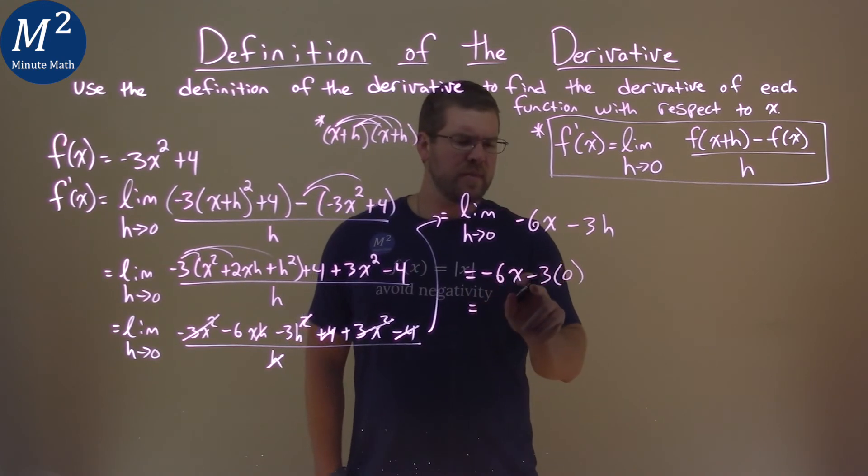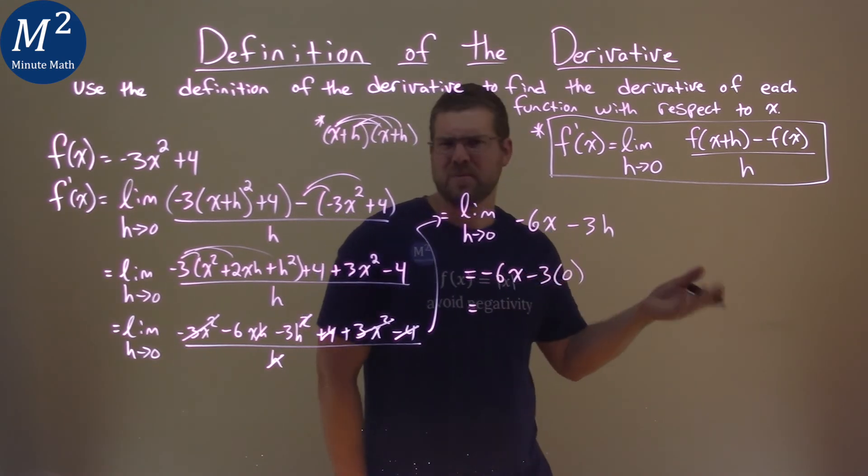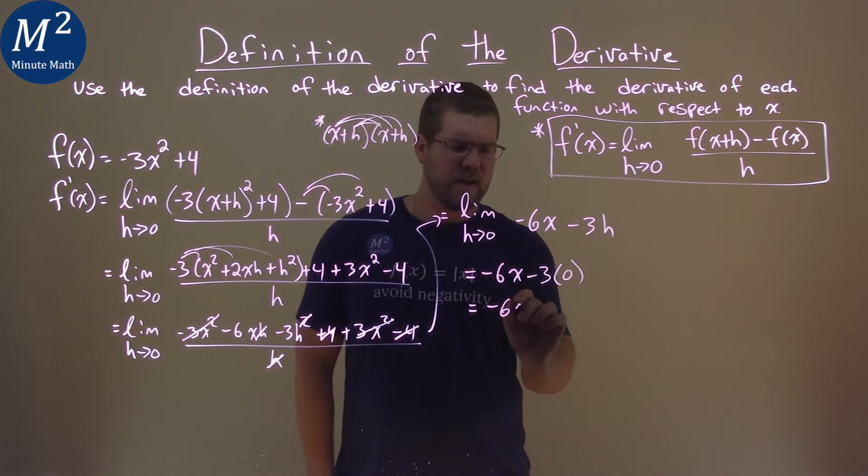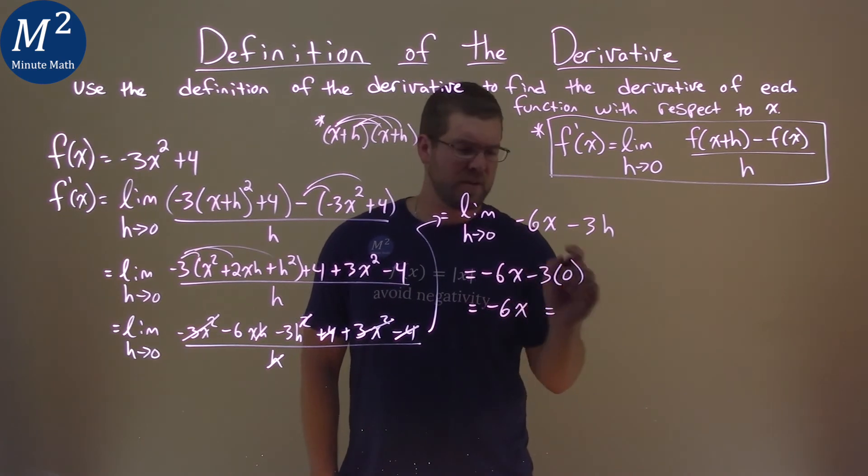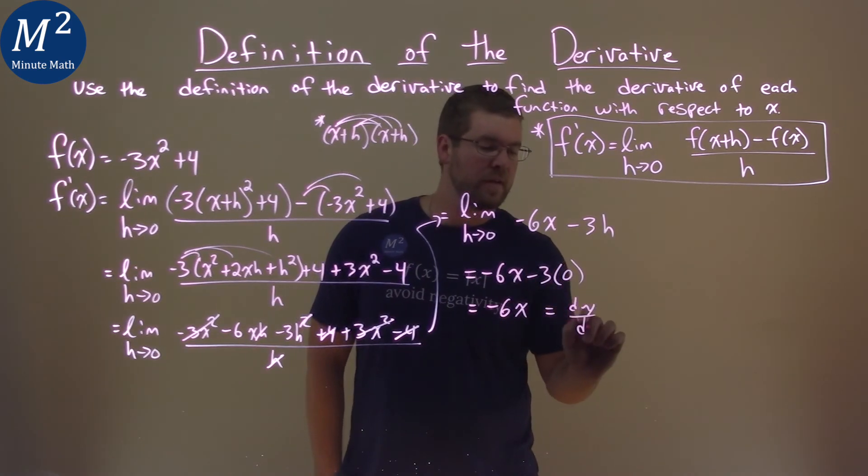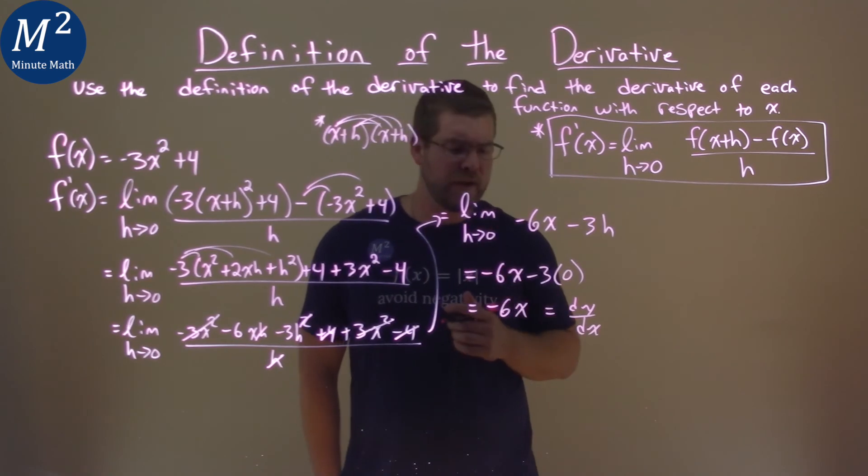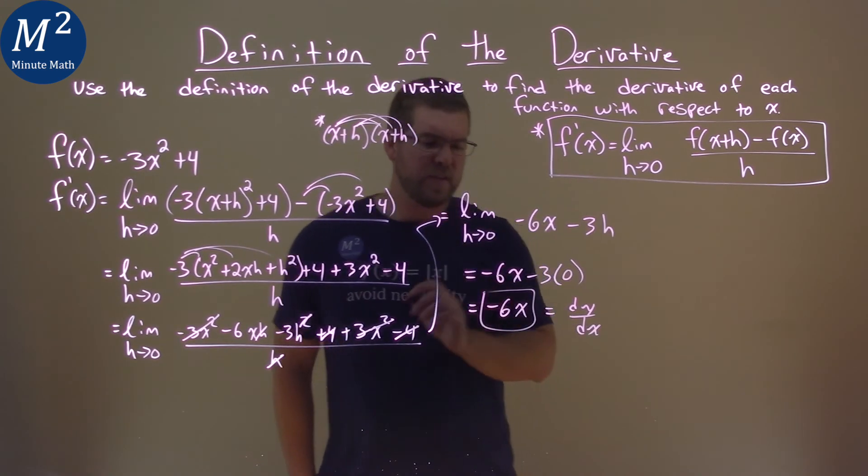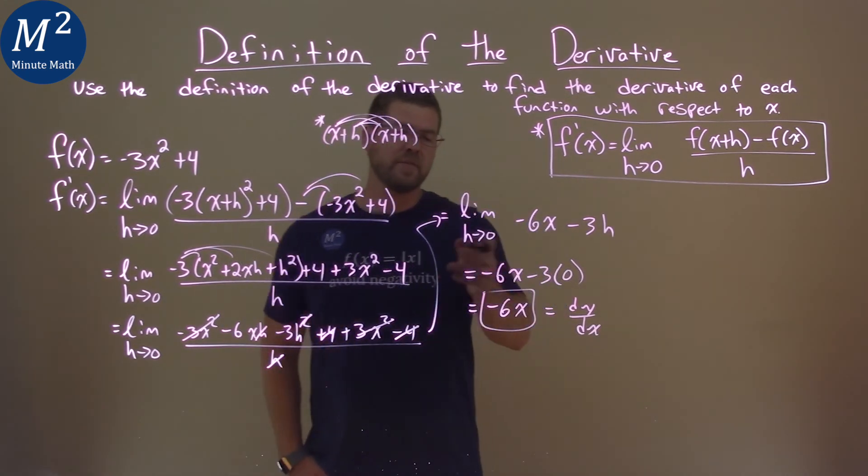So, we have negative 6x minus 3. 0 can go in for h now. And negative 6x minus 3 times 0 is 0, so negative 6x. And that's equal to our dy dx or f prime, however you want to write it. And so, our final answer here and our derivative is negative 6x.